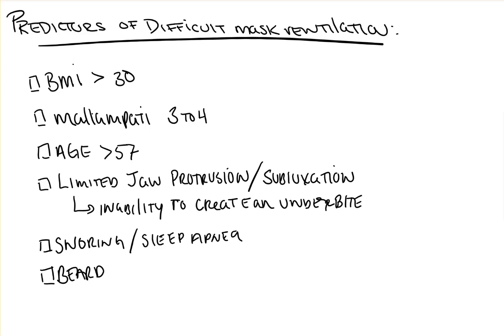The last one on this list is no teeth, or being edentulous. With these patients, their gums may almost cause a suction effect, sealing the mouth almost closed when you attempt to ventilate them. Having teeth, on the other hand, makes it easier to mask ventilate as it basically stents the mouth and gums open, allowing air to pass freely between and around them. It is recommended in patients without teeth to place an oral airway to facilitate easier mask ventilation.